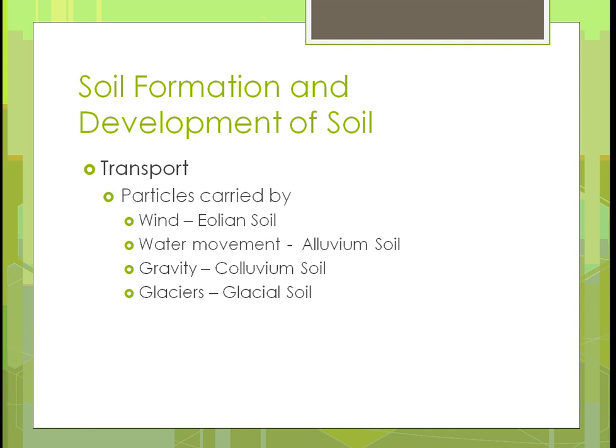In the formation and development of soil, soils aren't all just in one place — they are moved by different methods. There are four methods for these particles to move from one place to another. Wind can move it, and that's called eolian soil. If water moves it, it's called alluvium soil. If gravity moves it — if it's on a slope and slides down — it's colluvium soil. And when glaciers melt and move away, they drag soil from one place to another; that's called glacial soil.